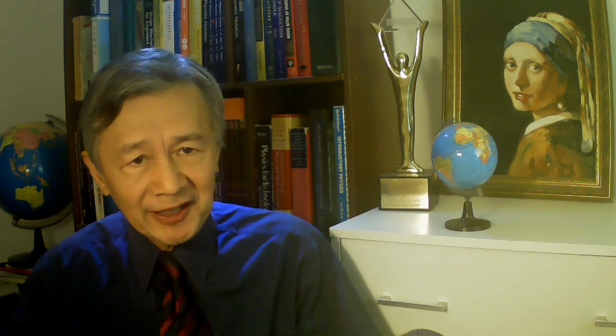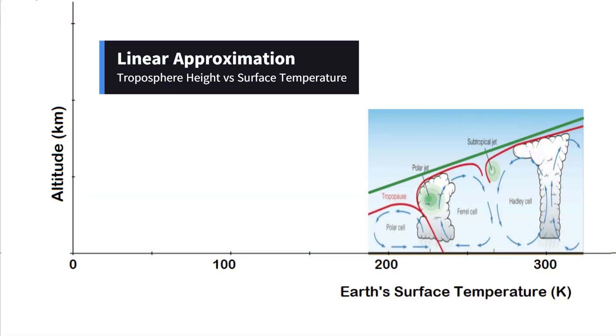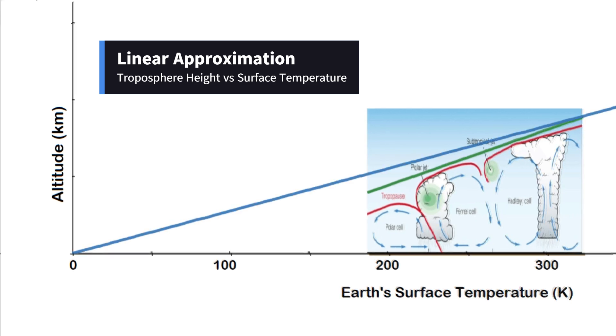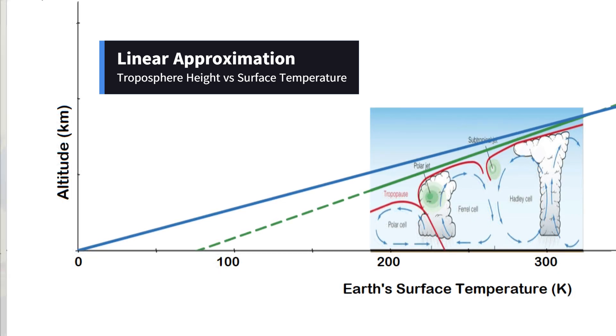Second, we know the surface temperature at the equator and the two poles is about 300 Kelvin and 200 Kelvin respectively. If I assume the dependence of troposphere height on surface temperature is linear, then the thickness of the troposphere would be close to zero when the surface temperature approaches absolute zero, as shown in the blue line. Unfortunately, the slope is too small compared with the trend line in green. But by extrapolating the trend line toward lower temperatures, as shown by the dashed green line, we can see the intercept is well above zero Kelvin.